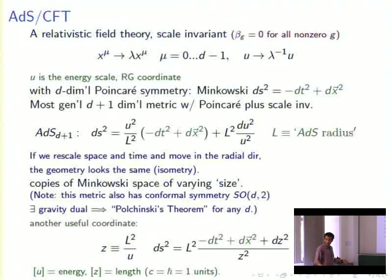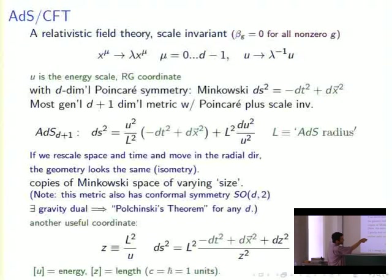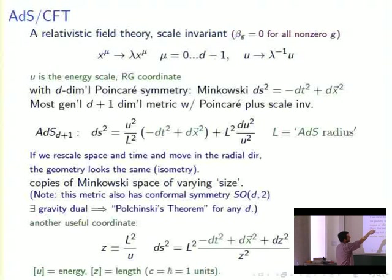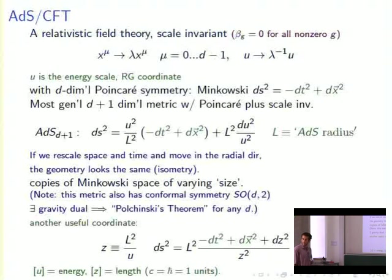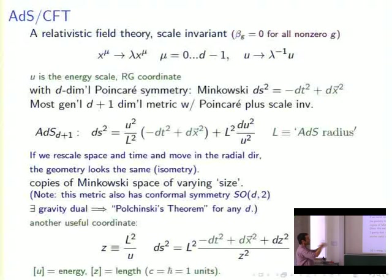Let's try to construct a metric with one extra dimension which preserves all these symmetries. There's a copy of Minkowski space in here, plus an extra coordinate u, with factors of u designed to cancel the variation under rescaling. The parameter l, with units of length called the AdS radius, appears here. This metric is called anti-de Sitter space, completely fixed by the symmetries. As we vary u, it rescales the size of this Minkowski space. Something not obvious is that this metric also has conformal symmetry, so scale invariance implies conformal invariance.